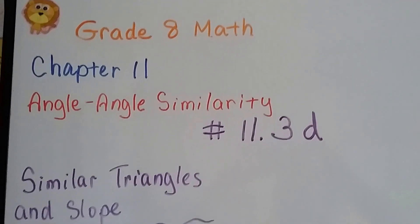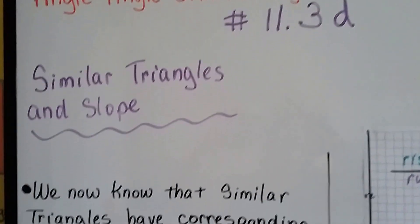Grade 8 math, number 11.3d. Now we're going to talk about similar triangles and slope.